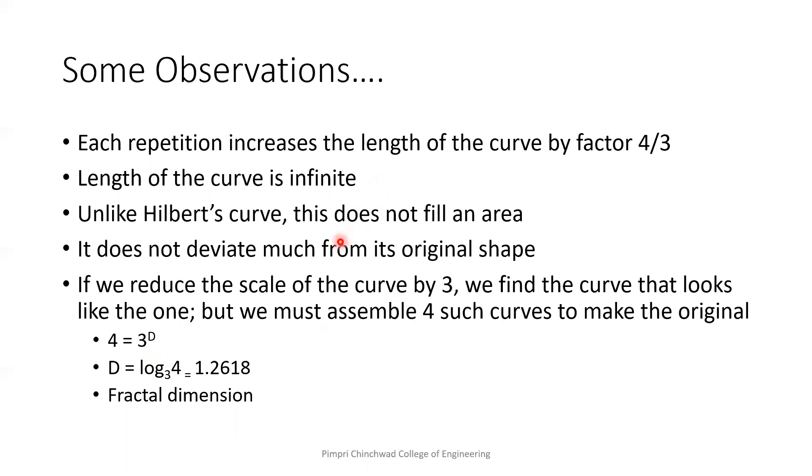And unlike Hilbert's curve, this curve does not fill an area. It is only modifying the perimeter, nothing else. It does not deviate much from its original shape. So originally, we had the triangle shape. And after the first iteration, we got a star shape. So eventually, it will be like a star shape only. Only instead of sharp corners, we will be having molded corners.